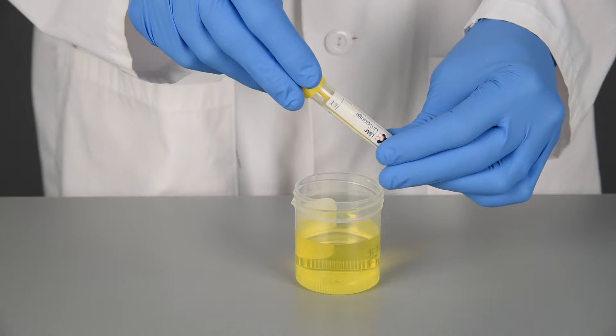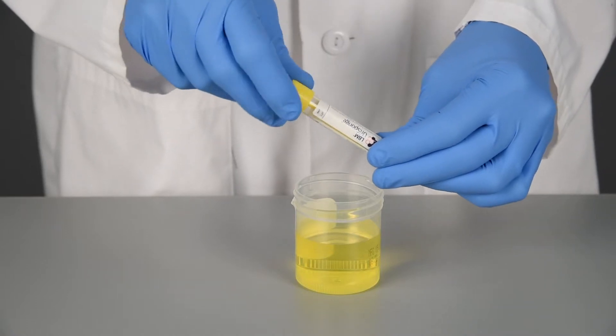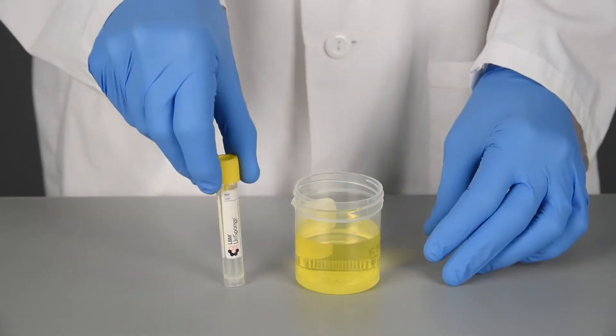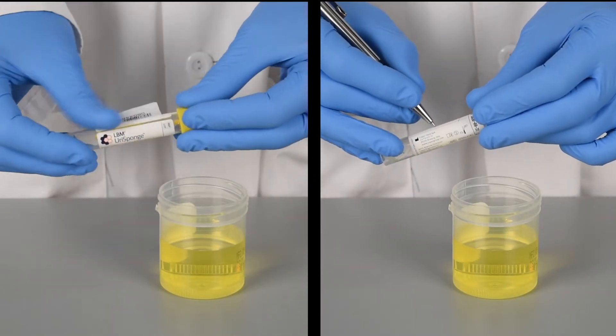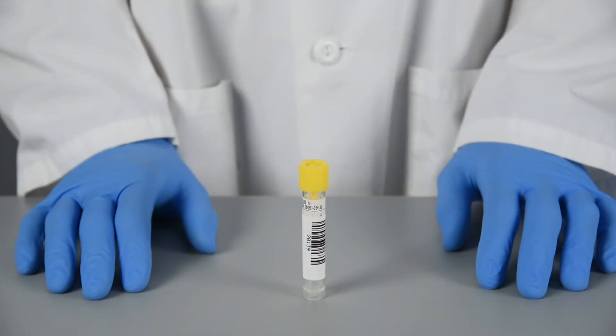Screw the cap to securely close the container. Label and transport Uri sponge specimens in accordance with institutional requirements. Immediately transfer the Uri sponge specimen to the laboratory, preferably within two hours of collection.